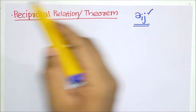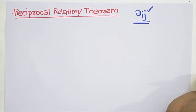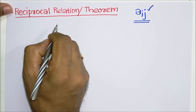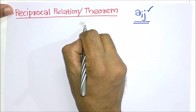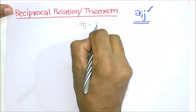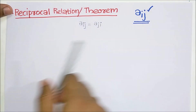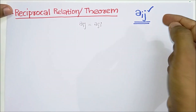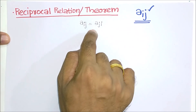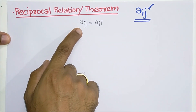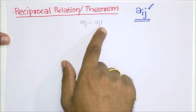The reciprocal theorem is very simple. It states that the influence coefficient of displacement at the i-th point due to a load at the j-th point is equal to the influence coefficient of displacement at the j-th point due to a load at the i-th point. That is, aij equals aji.